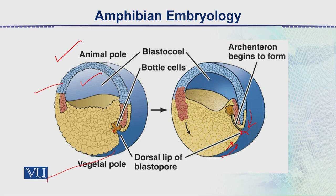The cells that appear to move inward become the endodermal cells. Those cells which remain outside and don't migrate are set to be the ectoderm, which later develops into the skin, nervous system, and so on.